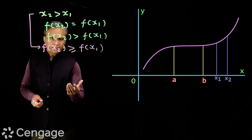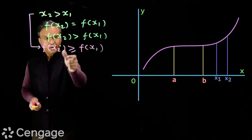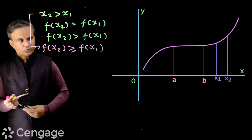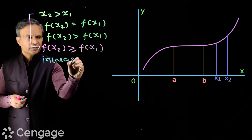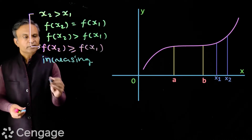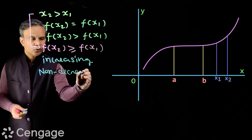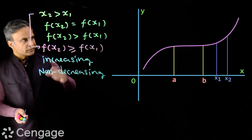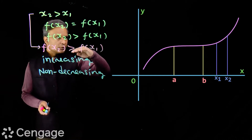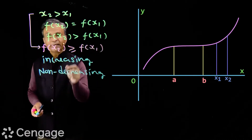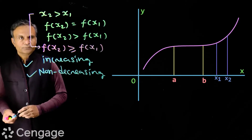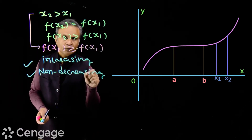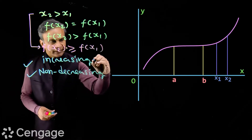In the strictly increasing case we had f(x2) strictly greater than f(x1), but here we have f(x2) greater than or equal to f(x1). Such a function is called an increasing function or non-decreasing function. Non-decreasing means the function either increases or remains constant. The definition is: if x2 > x1 then f(x2) ≥ f(x1).